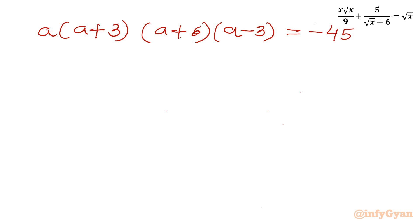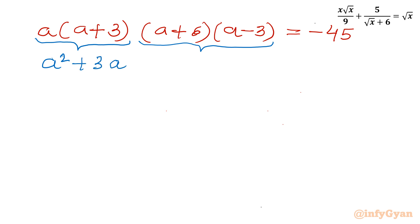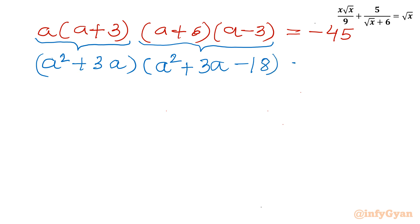Now I will multiply these two bracket pairs. So I can write (a² plus 3a) and here (a² plus 3a minus 18) equal to negative 45.